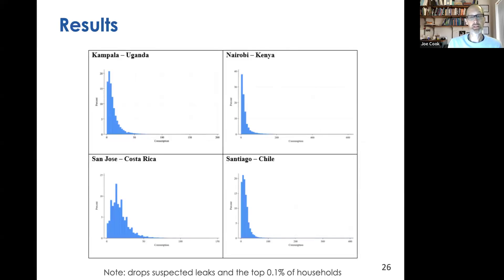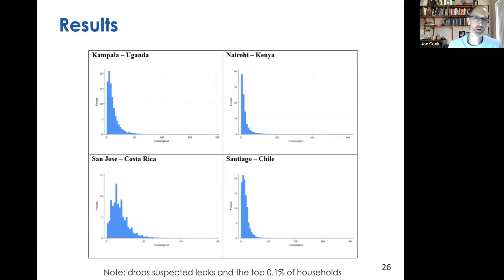Here is the distribution of water use — a probability density function for each of the four cities. The simple point is that water use distributions usually have a big right tail. This is seen in almost any water utility you'd ever look at. The motivating idea behind all this work is: how do we characterize that right tail and how important is it?